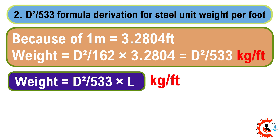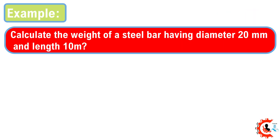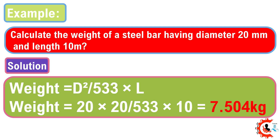Weight = (d² / 533) × length of steel bar. This formula is used for steel weight calculation per foot. Example: Calculate the weight of a steel bar having diameter 20 mm and length 10 meters. Weight = (20 × 20 / 533) × 10 = 7.504 kilograms.